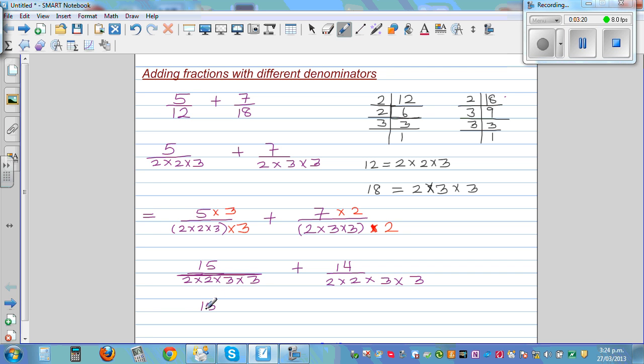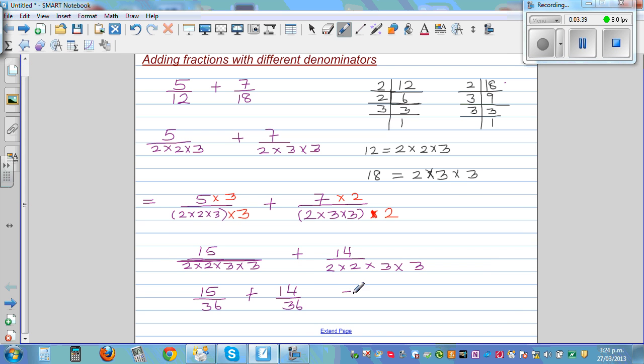So this has the same denominator. This is how much? 2 times 2 is 4, 4 times 3 is 12, times 3 is 36. So this is 15 over 36 plus 14 over 36. Now the denominators are the same, so I can add the numerators. So this is 15 plus 14 divided by 36, which is 29 over 36.